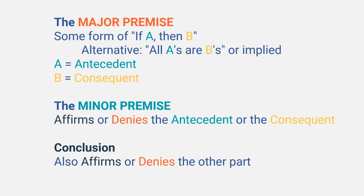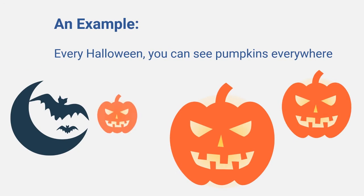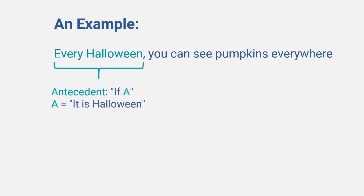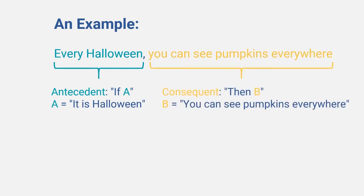Let's take one example of a seasonally appropriate major premise: 'Every Halloween you can see pumpkins everywhere.' Let's boil this down to an if-then relationship: if it is Halloween, then you can see pumpkins everywhere — so if A then B. A is 'it is Halloween,' which is the antecedent, and B is 'you can see pumpkins everywhere,' which is the consequent.